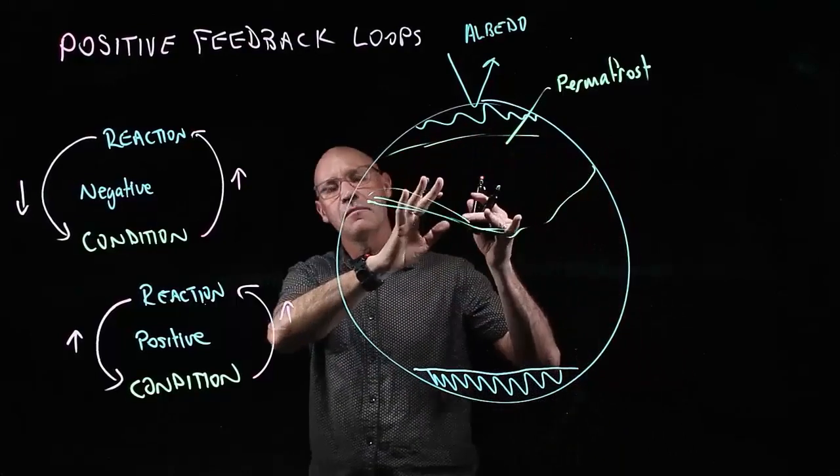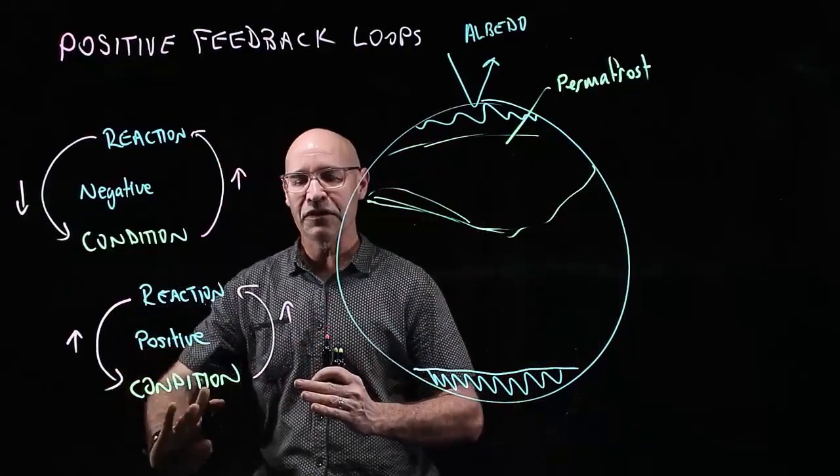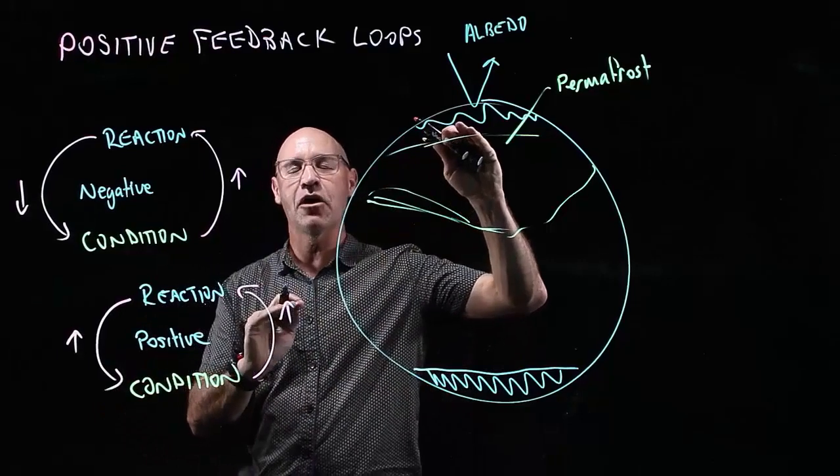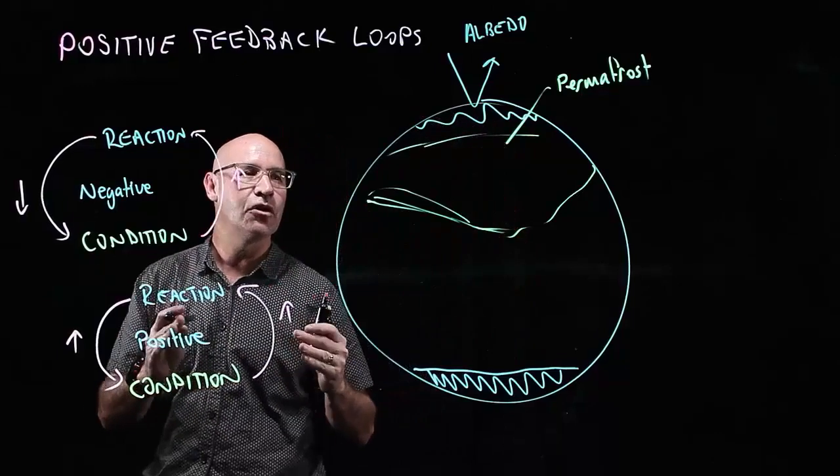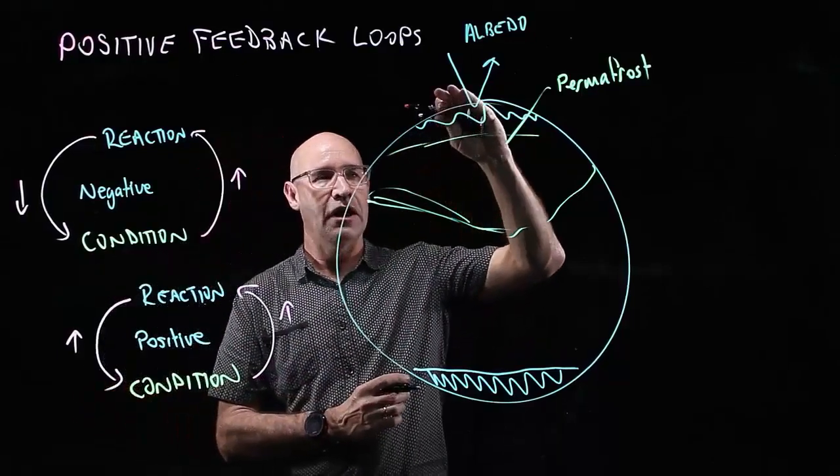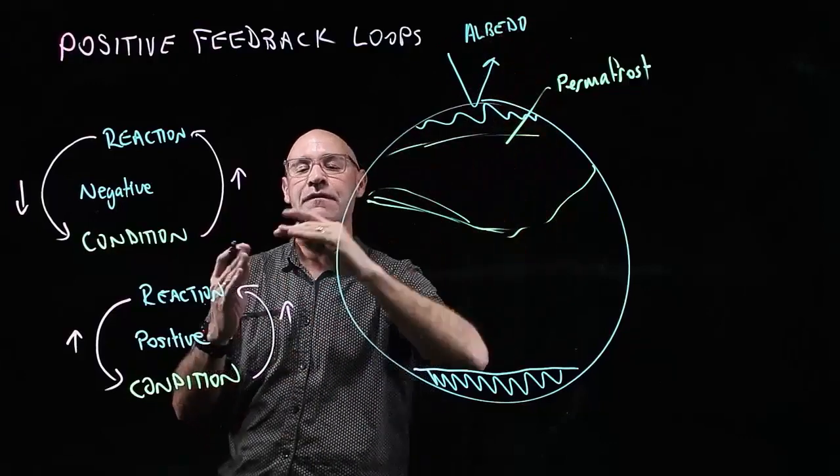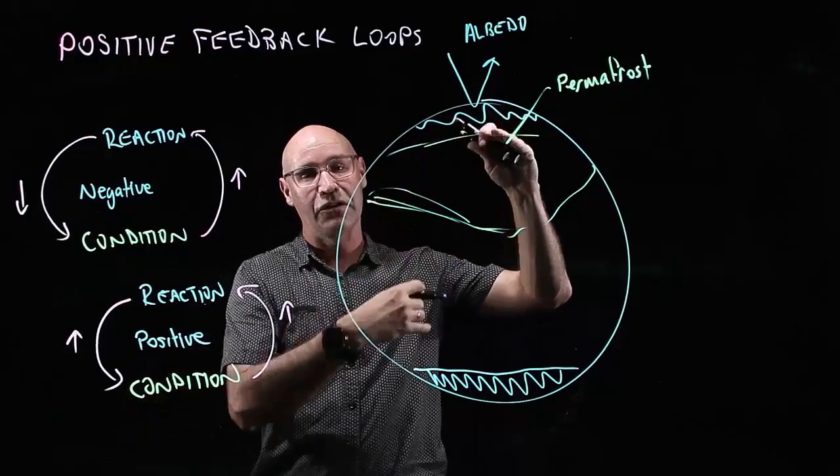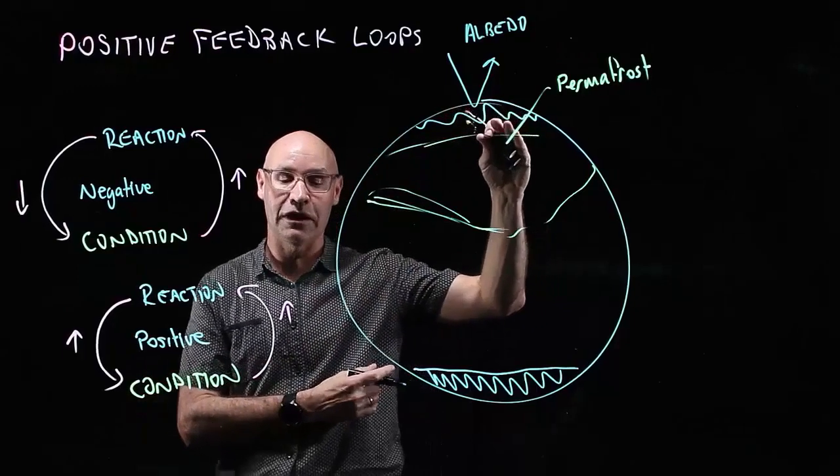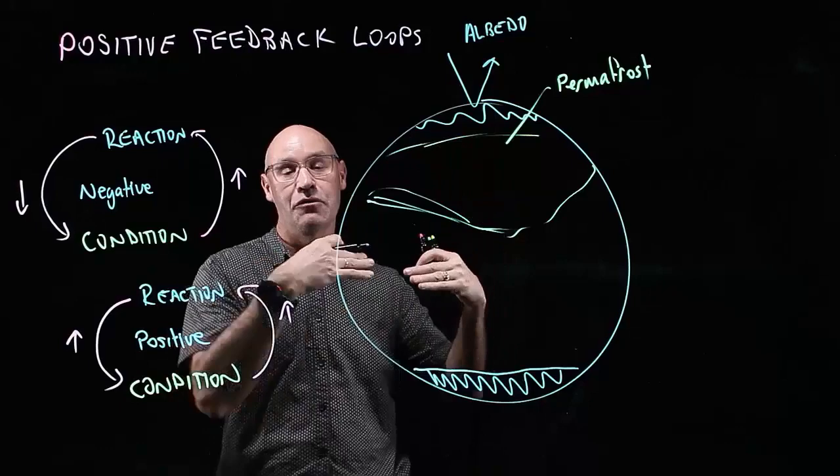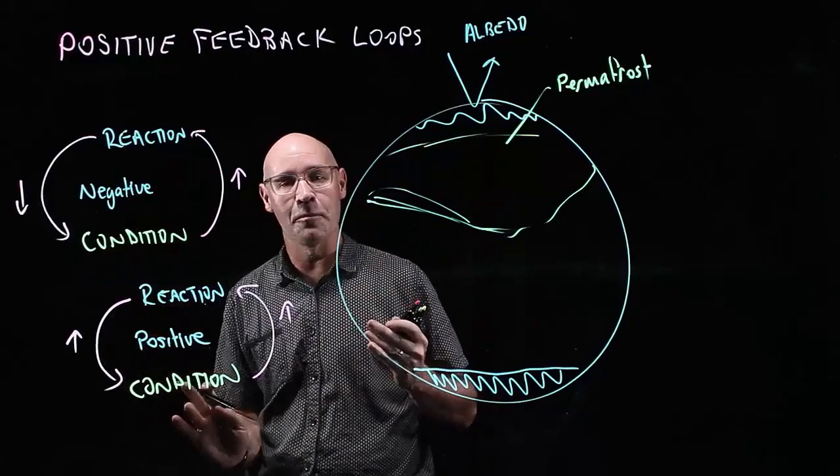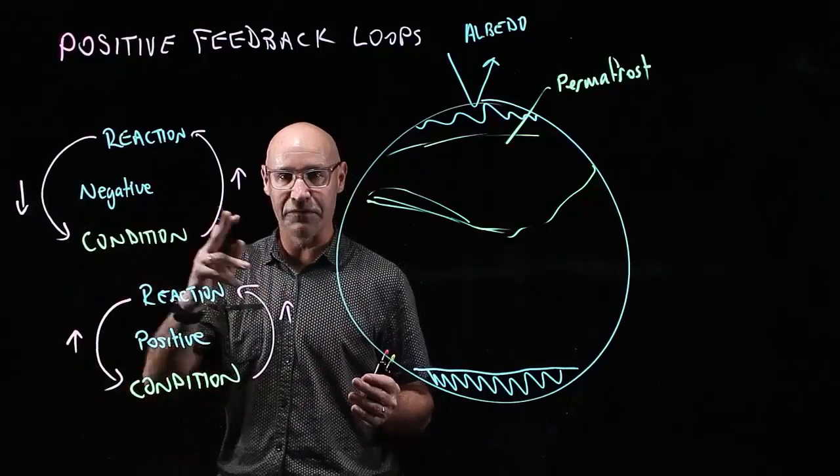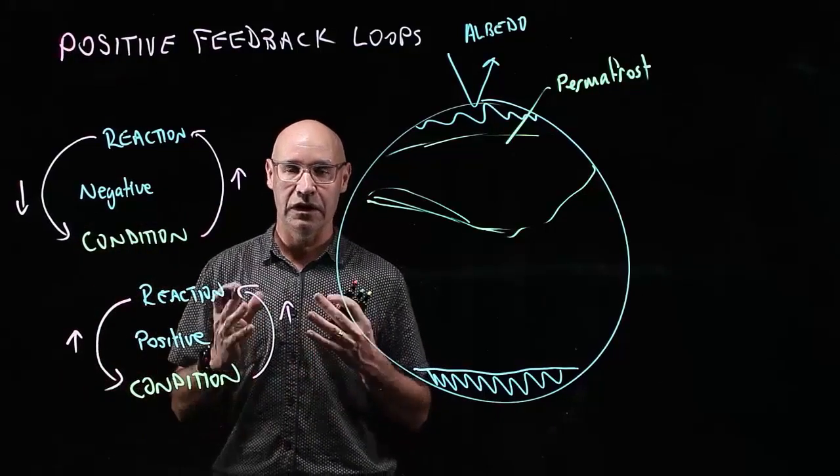We've got another positive feedback loop because as the temperature of the earth gets hotter, more of that ice melts, and so therefore less ice is available to reflect the sunlight. Therefore, the temperature of the earth gets warmer, which defrosts or melts more of this ice. So there's less ice to reflect the sunlight, so the earth gets warmer, which melts more ice. You get the idea—it just continues on in this positive feedback loop and gets worse and worse.